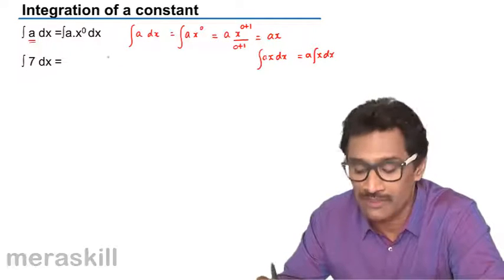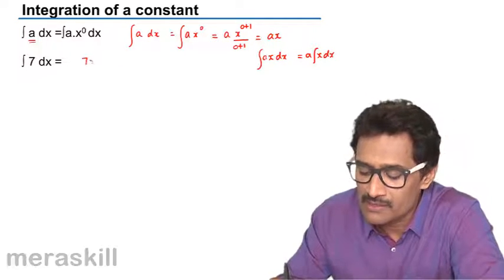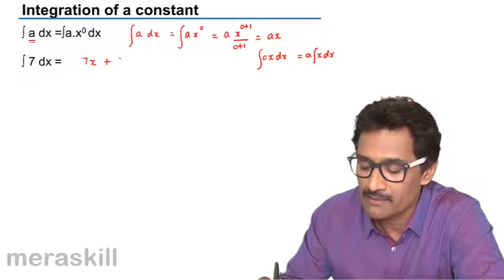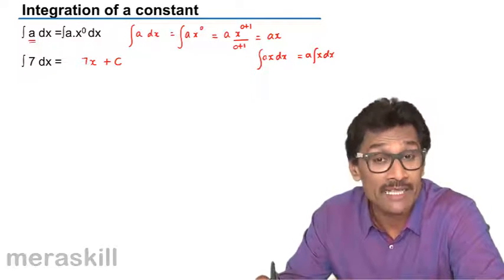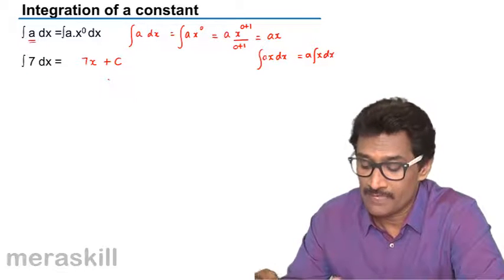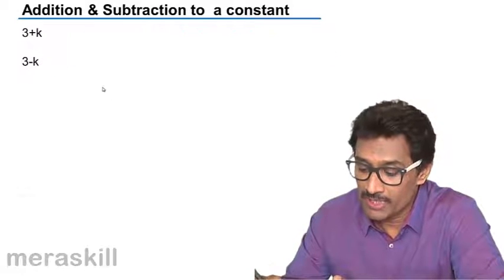So for example, integral of 7 dx is nothing but 7x plus the constant. Remember, always add the constant. So this is something which we need to be aware of.